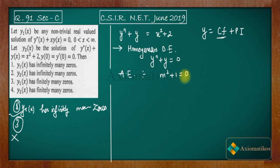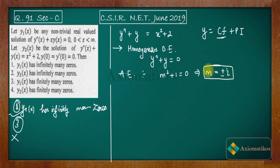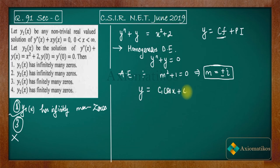The homogeneous equation is y'' + y = 0. The auxiliary equation is m² + 1 = 0, which gives m = ±i. Since the roots are complex, the complementary function is CF = c1·cos(x) + c2·sin(x).